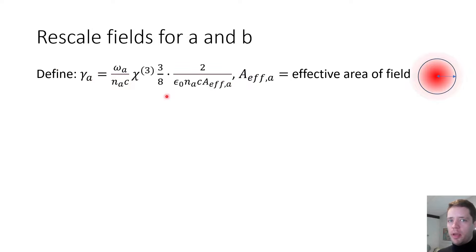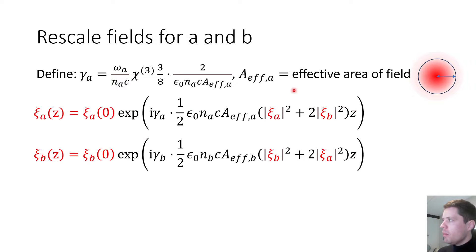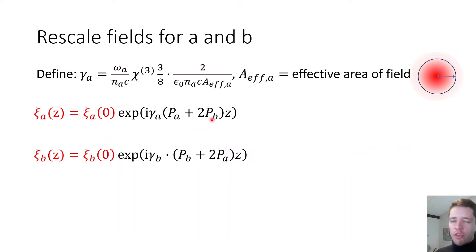To clean up this expression, we introduce a constant gamma_A given by the relevant material and geometric parameters, where A_eff is the effective area of the propagating field — for an optical fiber or waveguide, the effective mode area. Multiplying the squared electric field amplitude by this gives the field power. Since E_A and E_B are strong and approximately constant, expressing the solution in terms of these constant powers is quite convenient.